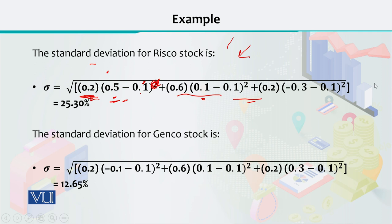By plugging in the values, we have calculated the standard deviation for RISCO stock returns, and that turned out to be 25.3% according to this example. I will also show you how to do it in Excel so you have an idea of how to actually carry it out. So the standard deviation for RISCO stock returns is 25.3%.